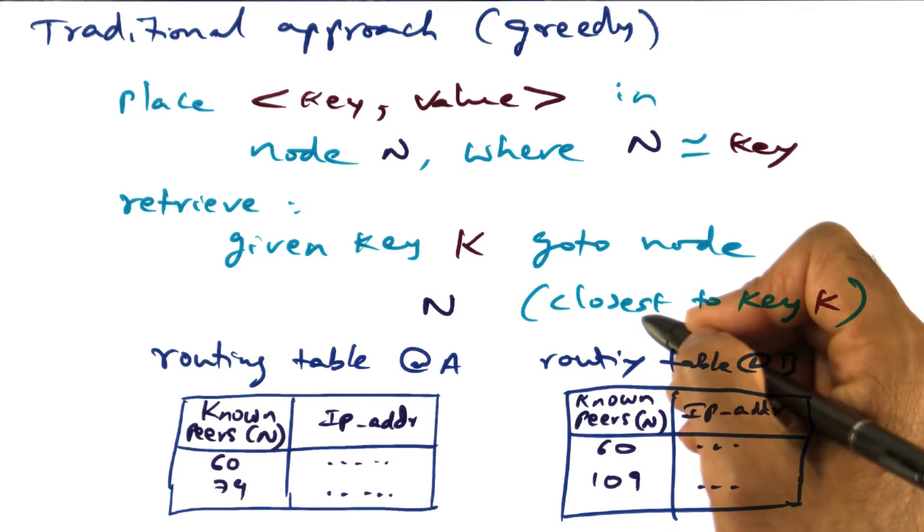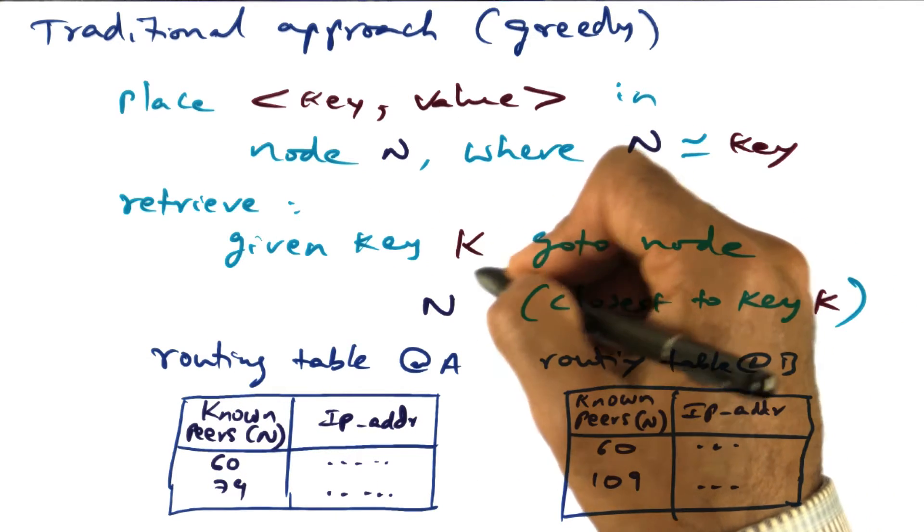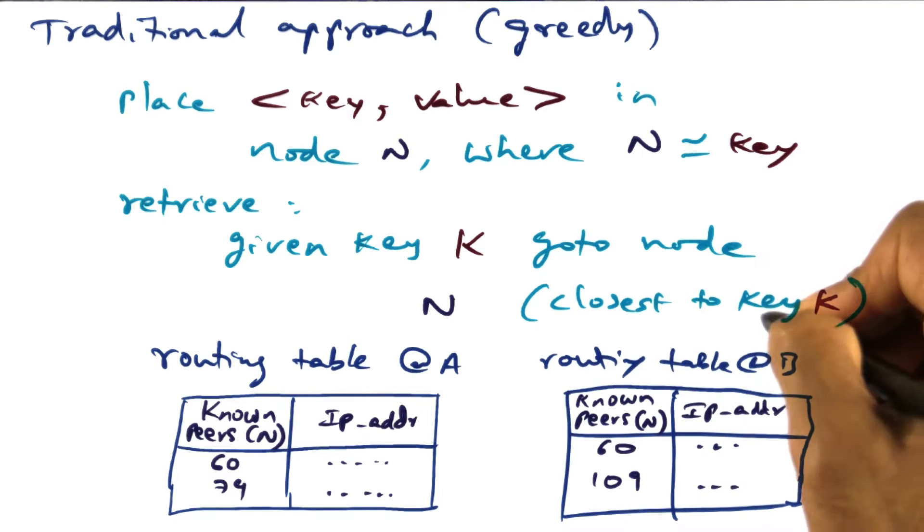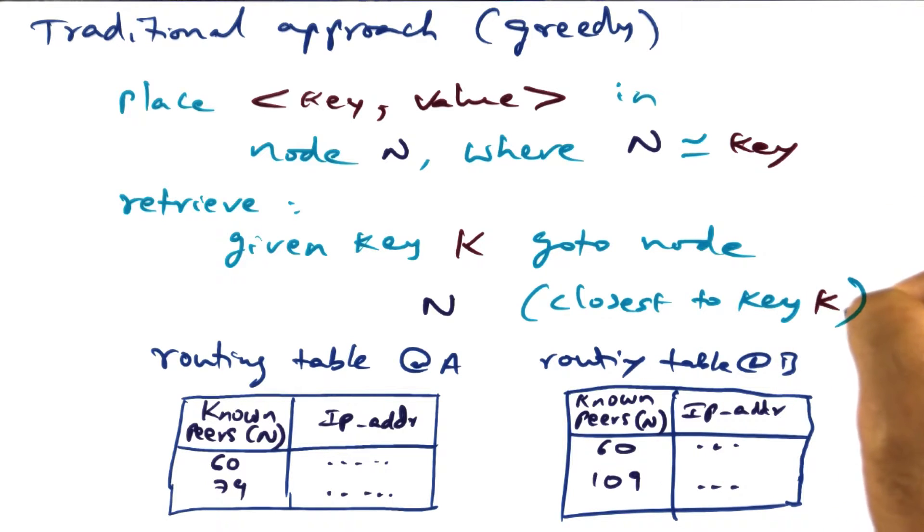So for retrieval, you just do the reverse. When you want a key k, you go to a node which is closest to key k.